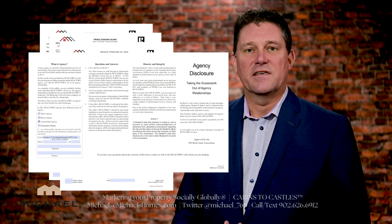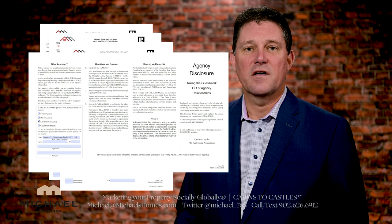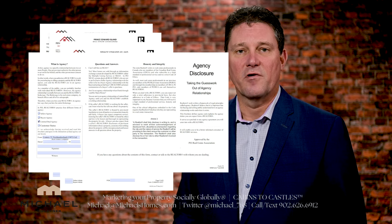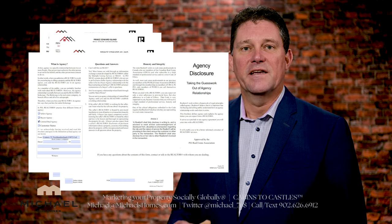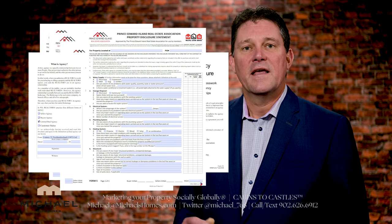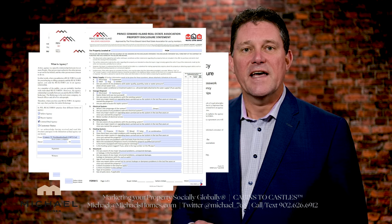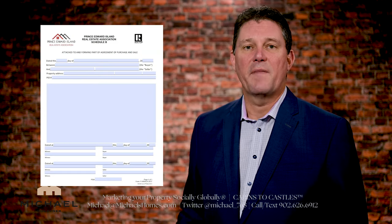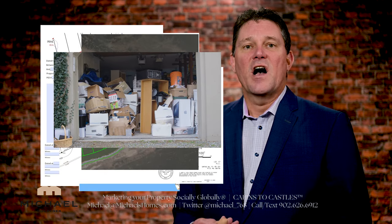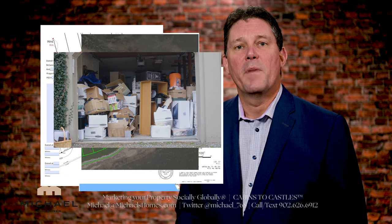And then you have an agency disclosure form. The agency disclosure form basically just tells you who your agent and or broker is representing. In addition to that, we would usually add a property disclosure. Sometimes a Schedule B and other documents like maps, surveys, geolinks, orthophotos, and pictures of contents could be included, but essentially it's the Schedule A, the purchase and sale, and the agency agreement.